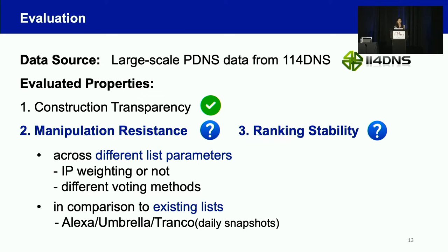We evaluate these two metrics across different list parameters — for example, testing with and without IP weighting — and also test different voting methods. We also compare lists constructed by our method to existing lists like Alexa, Umbrella, and Tranco.